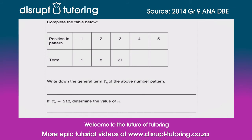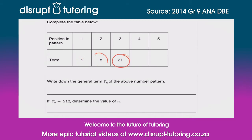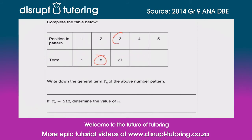But these numbers are very familiar. Do you notice how these numbers are our cubed numbers? So 1 cubed is 1, 2 cubed is 8, 3 cubed is 27, 4 cubed is going to be 64, and 5 cubed is going to be 125. That completes the table.